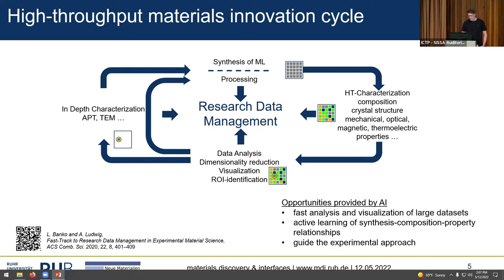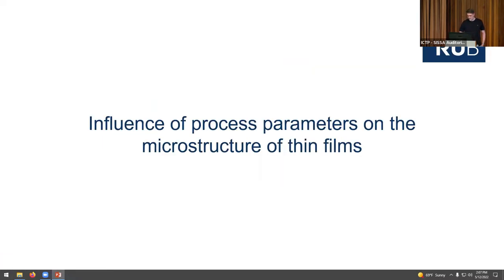There are several opportunities provided by artificial intelligence in this materials innovation cycle. First, to speed up data analysis; second, to visualize large datasets — dimensionality reduction is a real game changer for comparing large datasets. Active learning can further speed up analysis. AI can help identify synthesis-composition-property relationships and guide experimentation. I've brought several use cases we've been investigating over the past years.